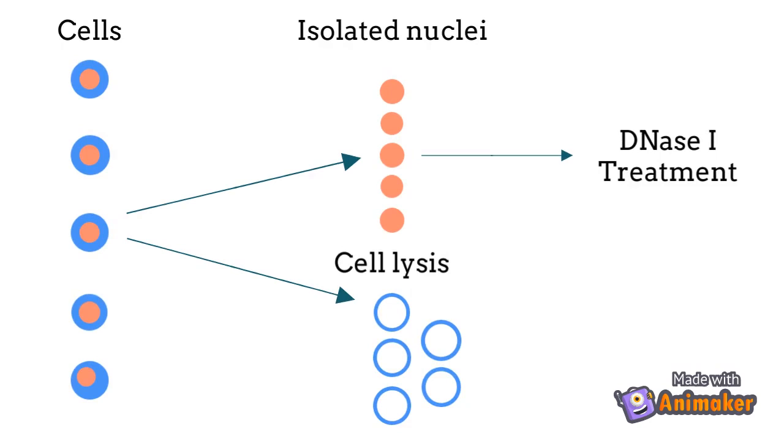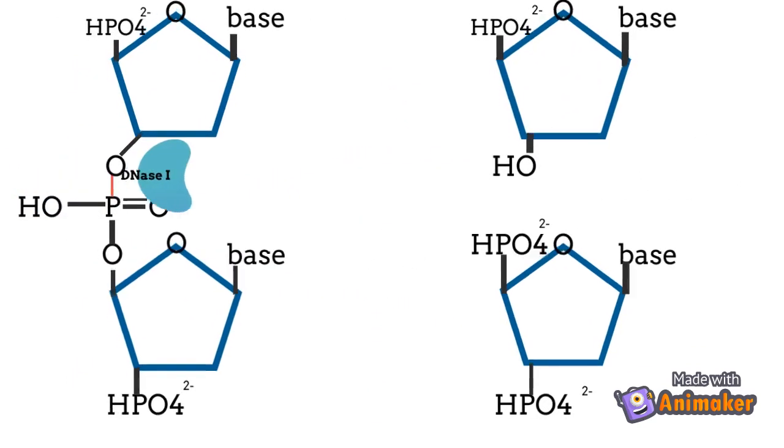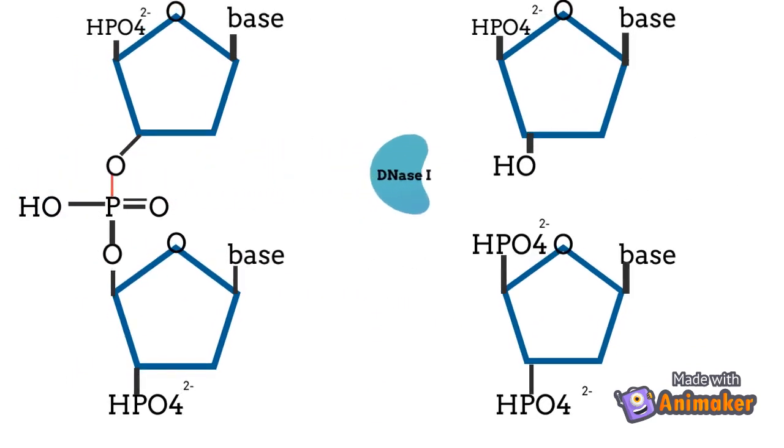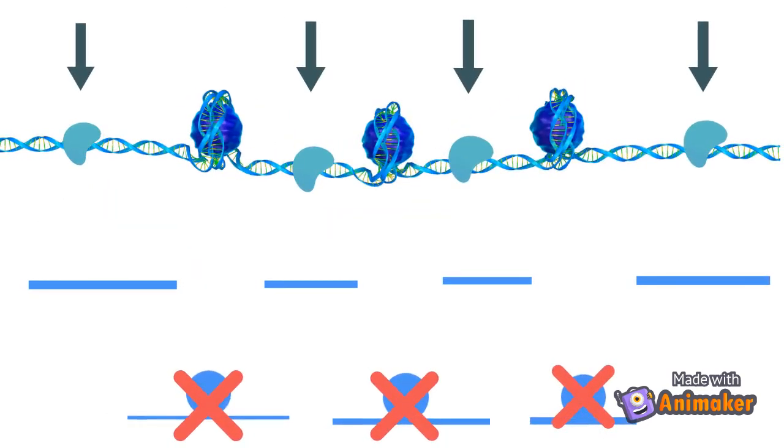The nuclei are then treated with an enzyme called DNase-1. DNase-1 is an endonuclease, an enzyme that cleaves the phosphodiester bond within the polynucleotide chain. DNase-1 predominantly targets open regions of DNA, also known as DNase-hypersensitive sites, that are devoid of histones and thus exposed to enzymes.